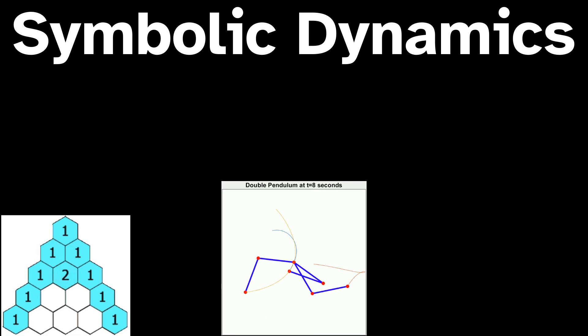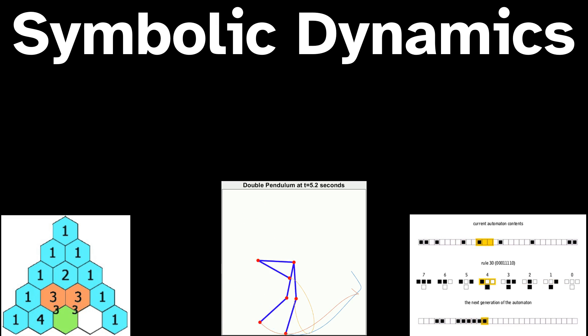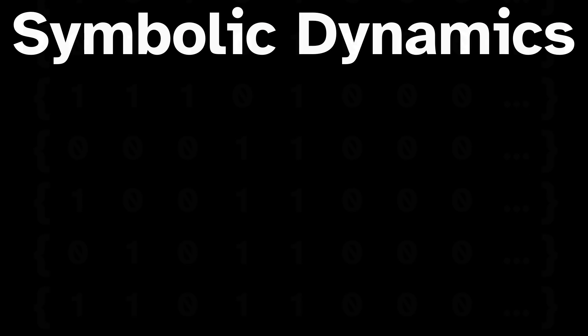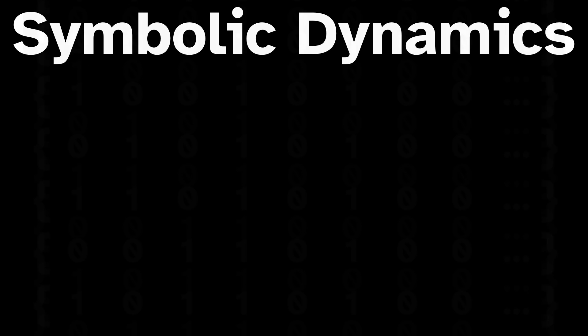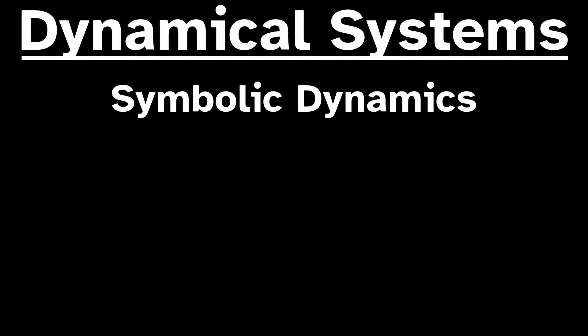There's a lesser-known niche in mathematics that sits somewhere between dynamics, combinatorics, and theoretical computer science. In symbolic dynamics, the evolution of natural systems are encoded using infinite sequences of symbols. These symbolic encodings can be studied to reveal information about the original objects you were interested in. In this video, I'd like to introduce you to some of the basic ideas of symbolic dynamics and raise awareness of this really interesting subfield of math as it comes up in more contexts than you might think.